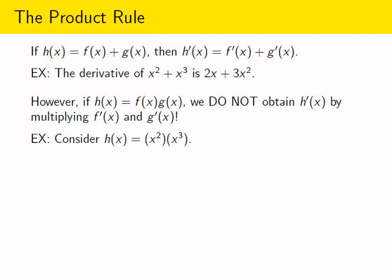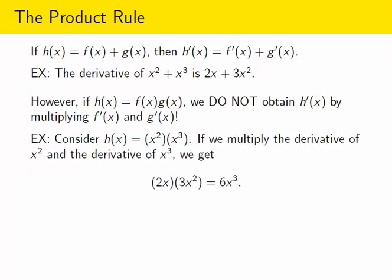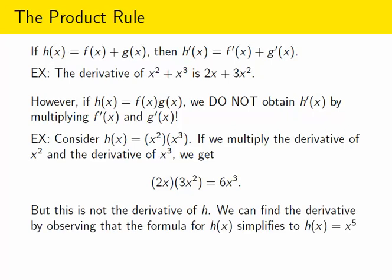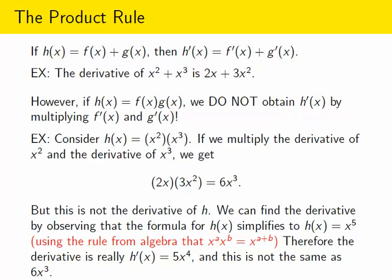For example, imagine you make a function by multiplying x squared with x cubed and you try to multiply the derivatives of those together. The derivative of x squared is 2x, and the derivative of x cubed is 3x squared. When you multiply those together and simplify, you get 6x cubed. But that is not the right derivative. We actually know how to find the derivative because we could simplify first: x squared times x cubed is x to the fifth, and the derivative of that is 5x to the fourth. That's not the same thing as 6x cubed — the derivative is not what you get from multiplying the two derivatives together.